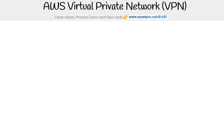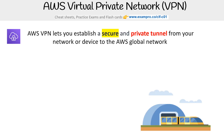This is Andrew Brown from ExamPro and we are taking a look at AWS Virtual Private Network, also known as VPN. AWS VPN lets you establish a secure and private tunnel from your network or device to the AWS global network. It's very important to emphasize the word 'secure' here.